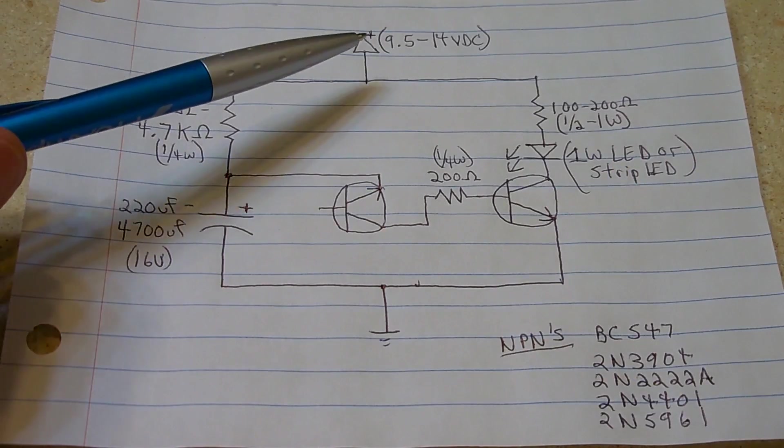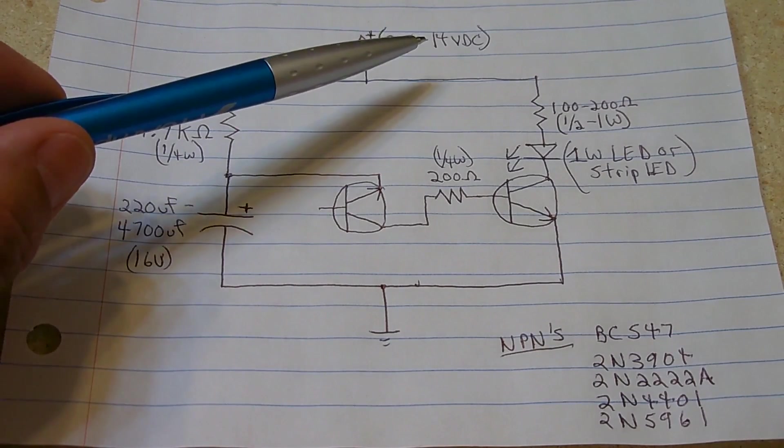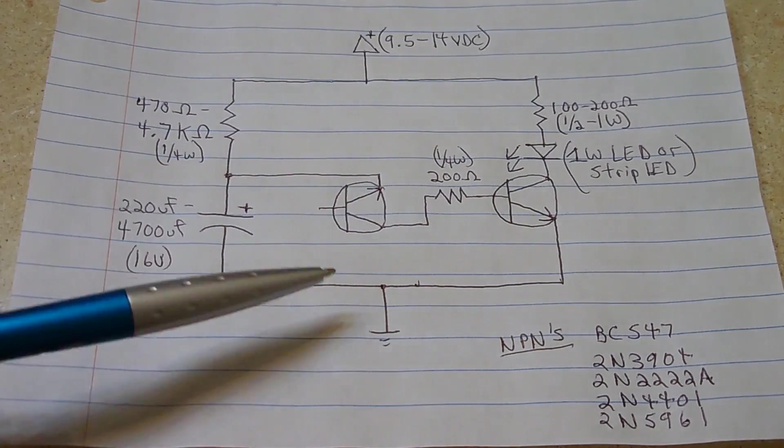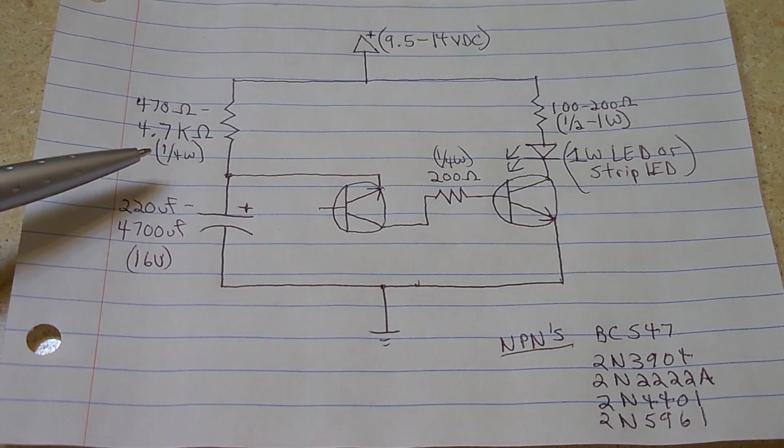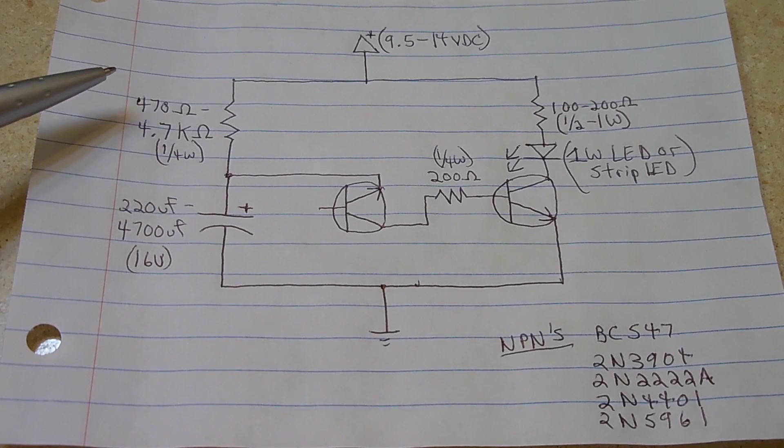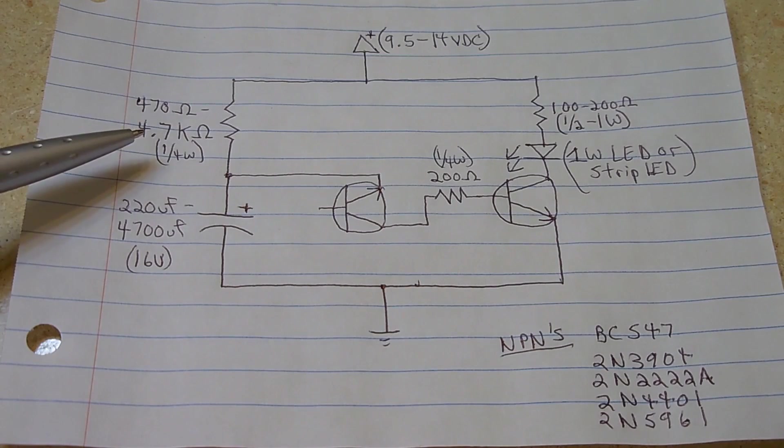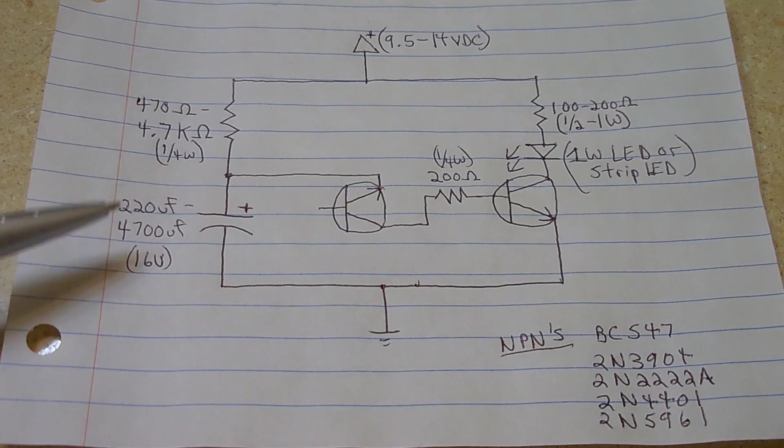Right over here is your 9.5 to 14 volt DC positive rail. And the bottom is the negative rail. Right here is a resistor. It's a quarter-watt resistor. And the value can vary between 470 ohms and 4700 ohms, or 4.7K.